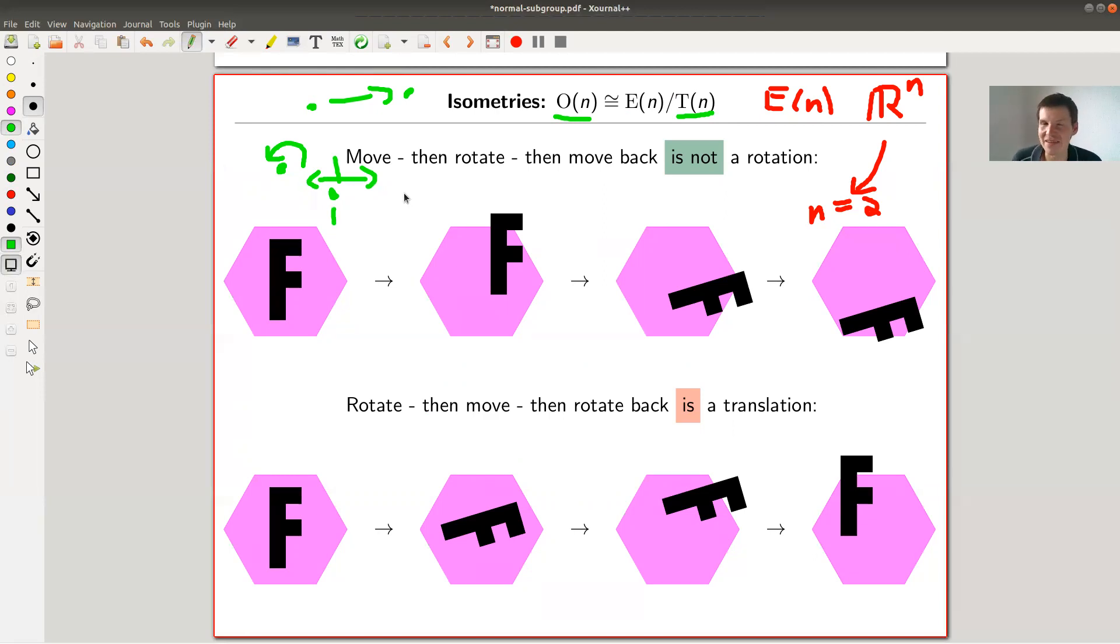And you can see this, and this is again why there should be a corresponding notion of a normal subgroup, because T(n) actually is a normal subgroup in here. So let's have a look what this actually means in this case. I claim the following: if you first move, that is the translation, let's call it T, then you rotate, this is a rotation, call it R, and then you move back, which is T inverse, then you do not get a rotation. And this is saying that rotations do not form a normal subgroup of the Euclidean group.